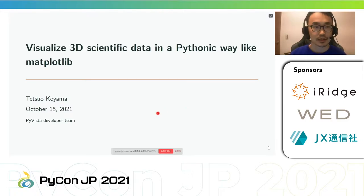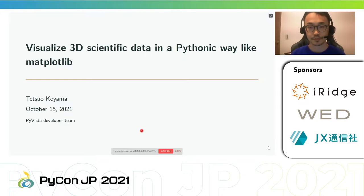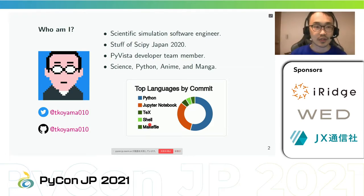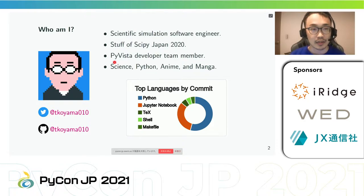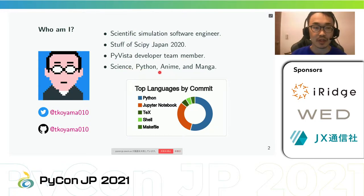Hi, my name is Tesso Koyama. Today I will talk about the title 'Visualize 3D Scientific Data in a Pythonic Way Like Matplotlib.' I am a mechanical simulations software engineer, was a staff of SciPy Japan 2020, and am a member of the five-star developer team. I love science, Python, anime and manga. My Twitter and GitHub account is t_koyama_010.